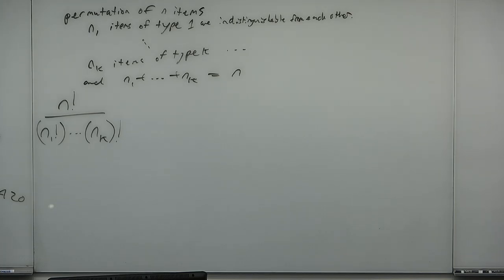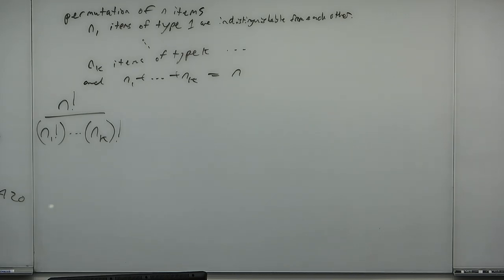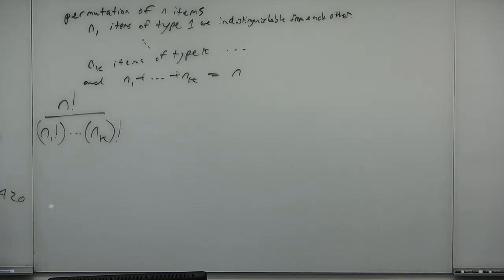Any questions on the statement? This is one of those that's really wordy. When you apply it, you'll know how. N1 items of type 1 are indistinguishable from each other. NK items of type K are indistinguishable between each other. Every item is one of the K types, and there's an N-permutation of N items. This is a lot of words, but we understand what we're trying to solve.